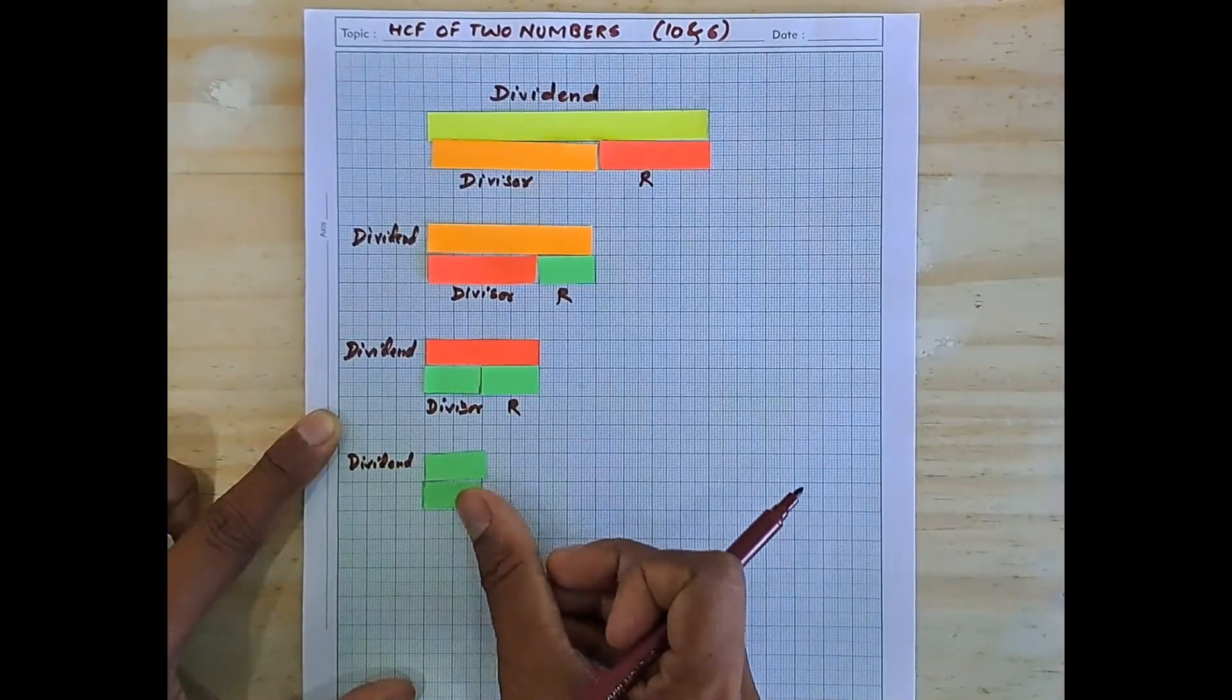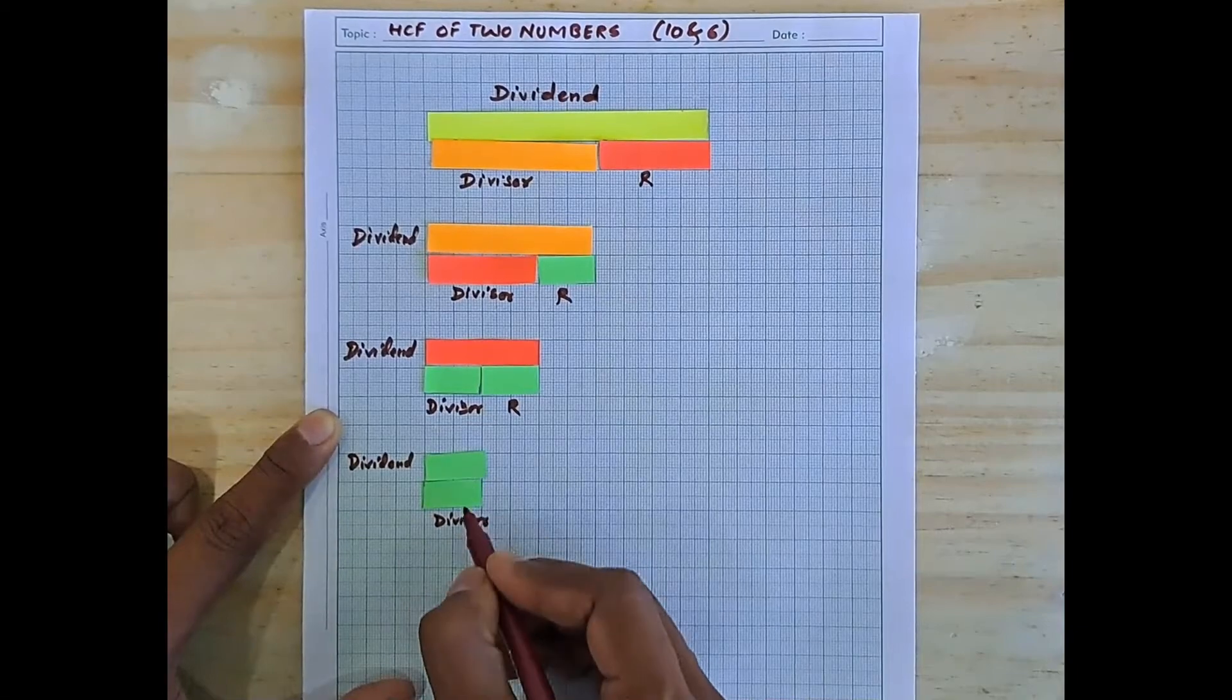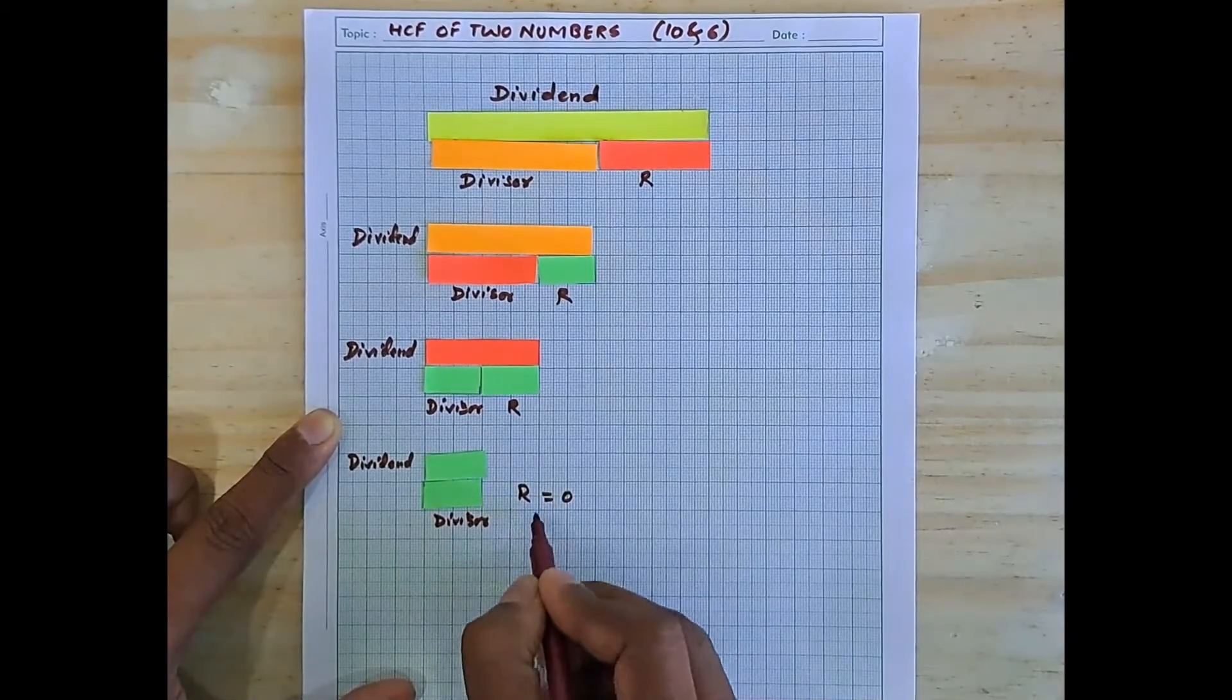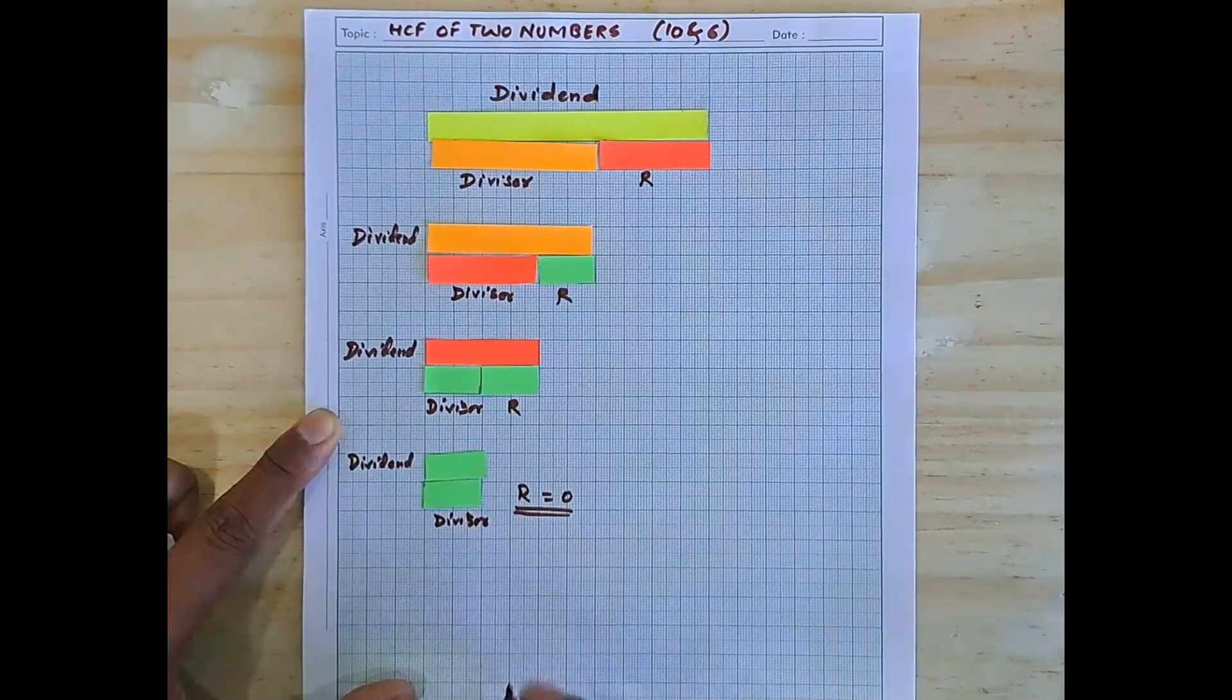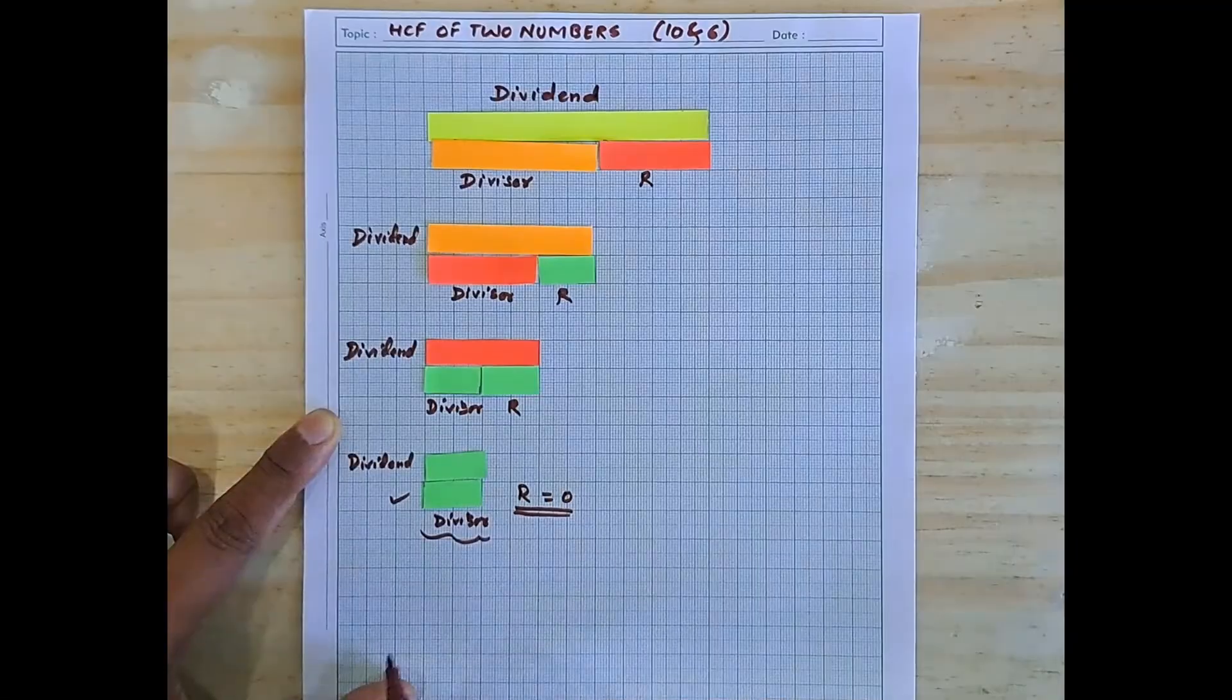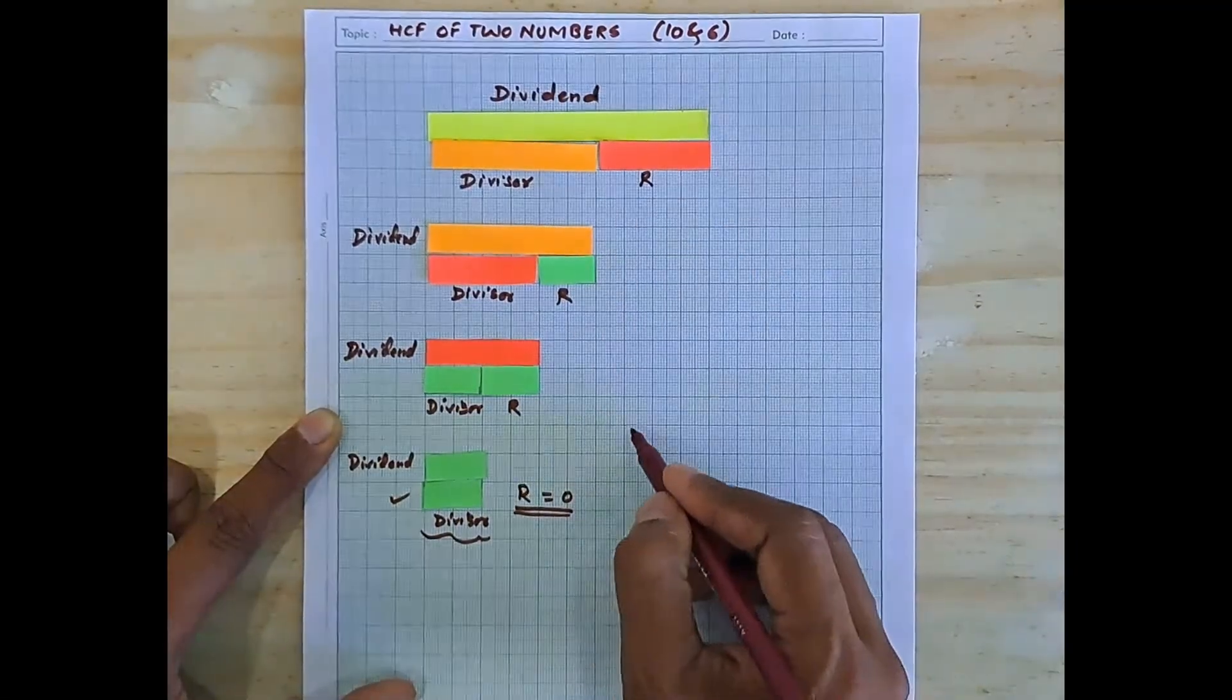If you divide it by this remainder, which becomes the divisor here, what will be the remainder? 2 divided by 2, the remainder is 0. And whenever you get a remainder 0, the last divisor, that means a strip of length 2 centimeters, becomes the HCF of the numbers.